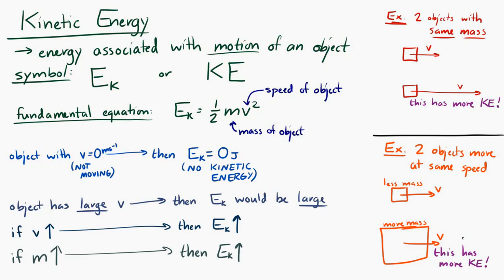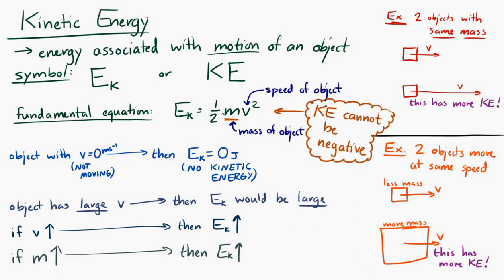Another thing to notice is that kinetic energy cannot be negative. Look at the equation: one-half mv squared. Mass m cannot be negative, and if you square the speed, v squared can't be a negative number — unless you have an imaginary speed, which would be very strange. So kinetic energy has to be either zero or positive; it cannot be negative.